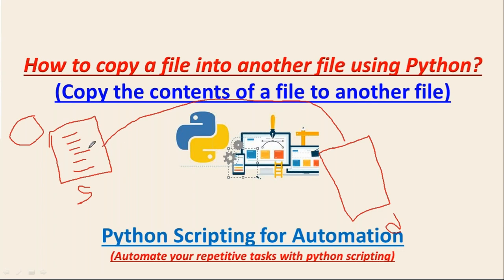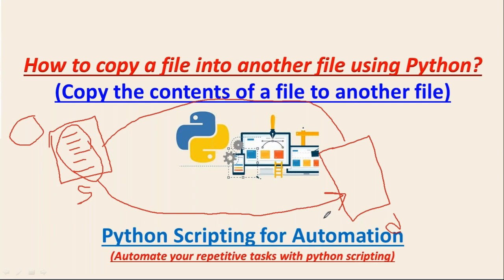The first step is to read the content of your source file. Then whatever data you read from your source file, write it into the destination file. If you want to read data from any file in Python, you have to open that file in read mode. And if you want to write any content to a file, you have to open that file in write mode. The content which you have in hand, you can write it into your file.